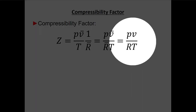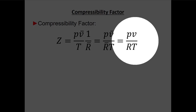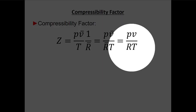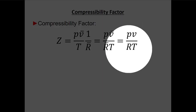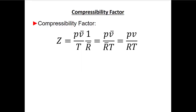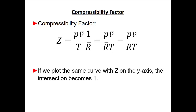The benefit of not using moles is that we don't have to calculate how many molecules are in, say, three kilograms of air. But the cost is that we can no longer use the universal gas constant — instead we have to use the specific gas constant, which will change depending on the gas we're talking about.